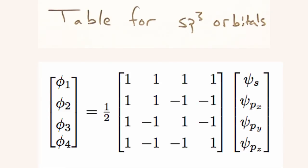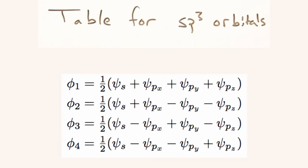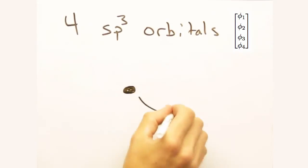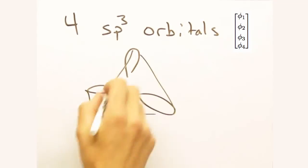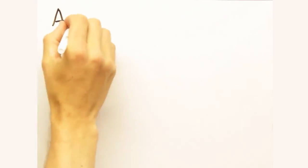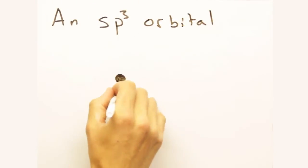So the values in the table are just weighing factors for the original s and p orbitals? Bingo. And in the case of carbon, its s and 3p orbitals hybridize into four sp3 orbitals that form a tetrahedra. Each of these hybrid orbitals will look like this.